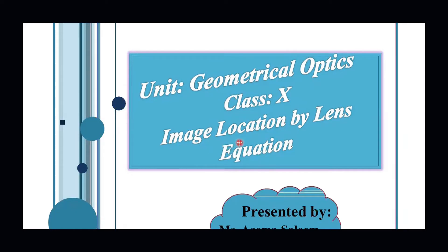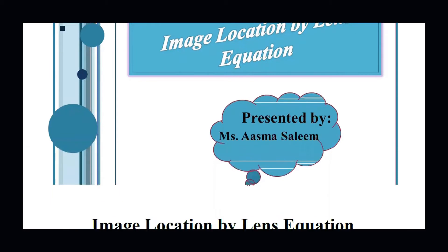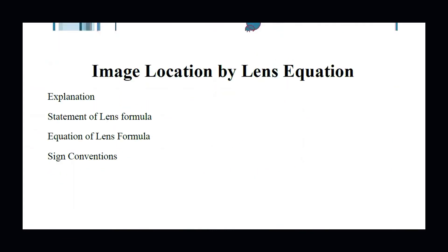We saw how image formation occurs at different distances — between the focal length and double the focal length. Today we will learn how to locate the image. If you want to know any details about your image — how you can find that out — we will explain it with the lens equation, which is a formula. If you want to know the size, the distance, whether it is real or inverted, we use the lens equation.